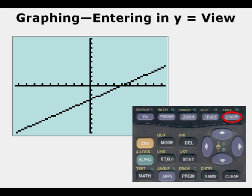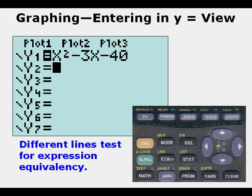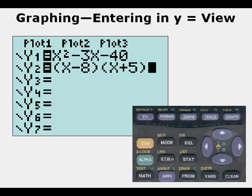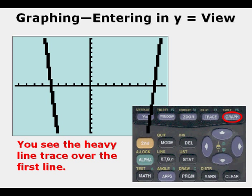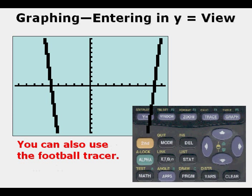We can use different line styles for Y1 and Y2 to test for expression equivalency. To do this, go to the far left and set one function to a thick line. When both functions are graphed, the thick line will trace over the original — if they're the same function, you'll see it trace over exactly. The football tracer is also an excellent line type to use for testing equivalency.